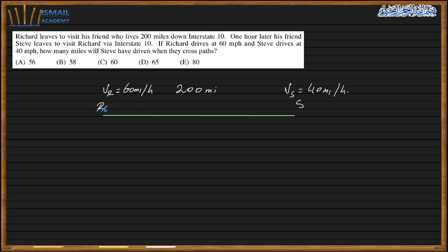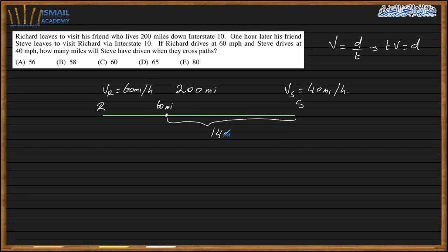After one hour, Richard has already traveled 60 miles, so the remaining distance between Richard and Steve is 140 miles. Since velocity equals distance over time, and they are traveling toward each other, they share the same time T from the moment Steve leaves.